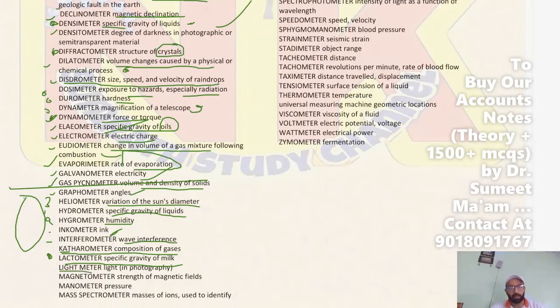Next, Light Meter is used to measure light in photography. Next, Magnetometer is used to measure the strength of the magnetic field — this is most important.